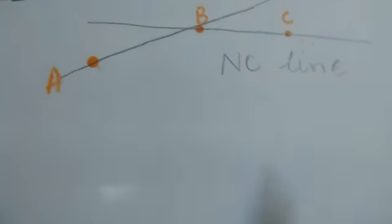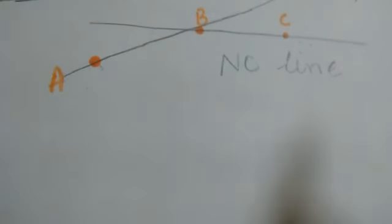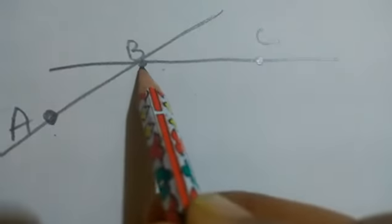The next question is: what is the maximum number of points through which a single line can pass? I am drawing the diagram again. If I pass the line this way, it takes only two points. If I draw a line another way, it contains points B and C — so a line always passes through two points.